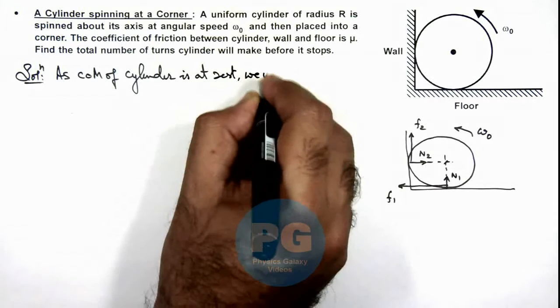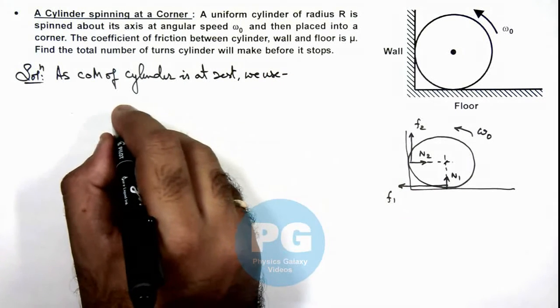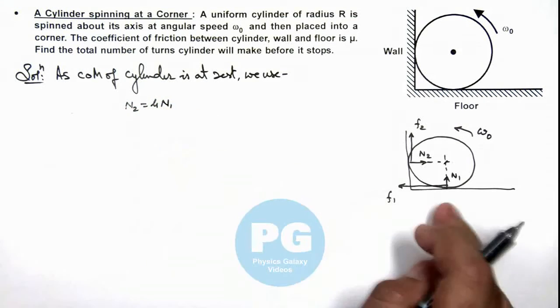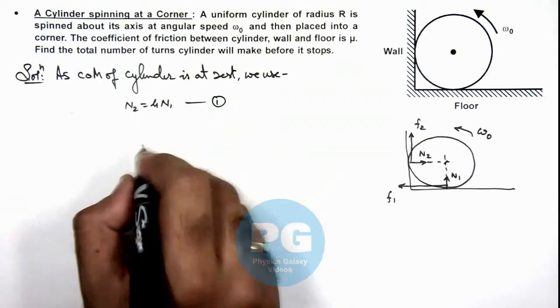Here we use, in this situation we can write the value of n2 is equal to mu n1 in horizontal direction. Say this is our equation 1.